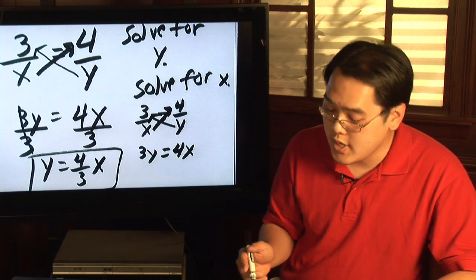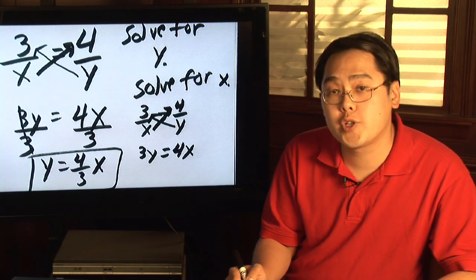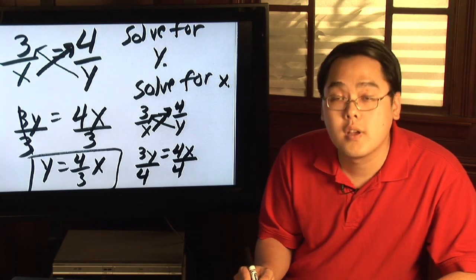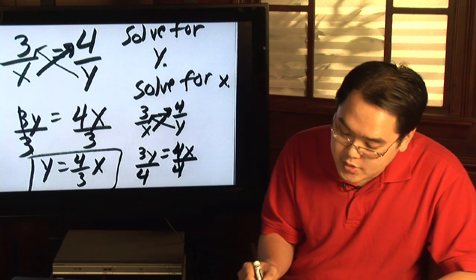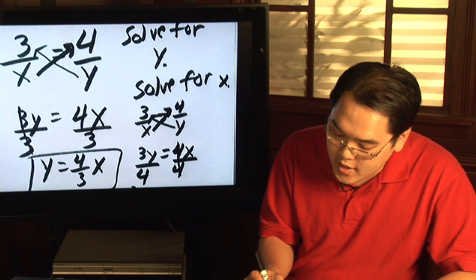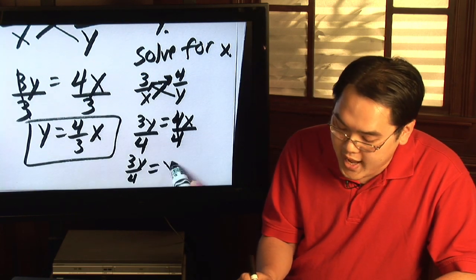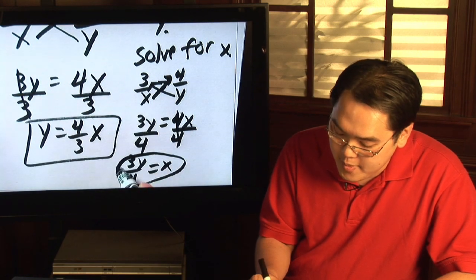So being that 4 is being multiplied with the x, you would divide both sides by 4. And so as a result, the 4's will cancel, and you are left with 3y over 4. And that is what x will end up being.